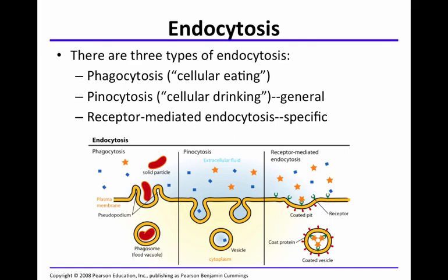There are three types of endocytosis: phagocytosis, pinocytosis, and receptor-mediated endocytosis. Phagocytosis is often seen as cellular eating — the cell engulfs some solid particle. Pinocytosis is associated with cellular drinking — the general movement of an ion or something within the extracellular fluid coming into the cell.